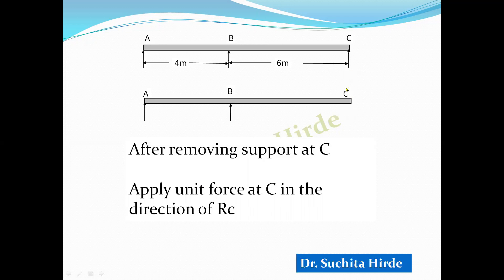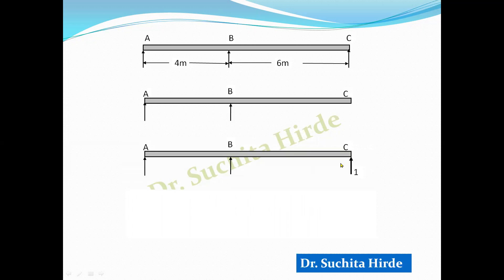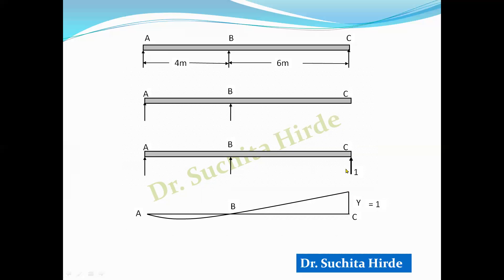To draw the influence line diagram we need to apply unit deformation, meaning we must make one ordinate equal to 1. However, since we don't initially know the force required for unit deformation, we apply a unit force at C in the direction of RC. The beam then deflects to give some ordinate Y, with deflections at A and B equal to zero since they are supports.